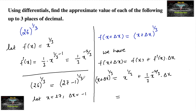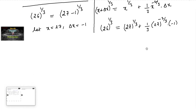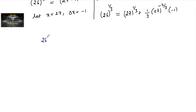Substituting: (x + delta x)^(1/3) = (27 - 1)^(1/3) = 26^(1/3). This equals 27^(1/3) plus (1/3) times 27^(-2/3) times delta x, where delta x = -1. Since 27^(1/3) = 3 and 27^(-2/3) = 3^(-2), we get 3 + (1/3)(3^(-2))(-1).